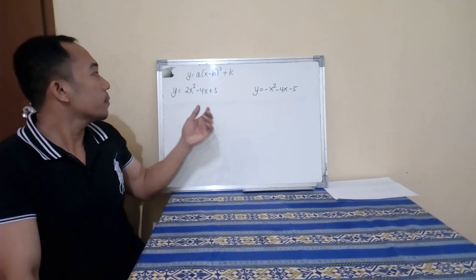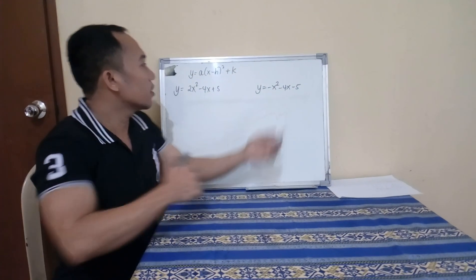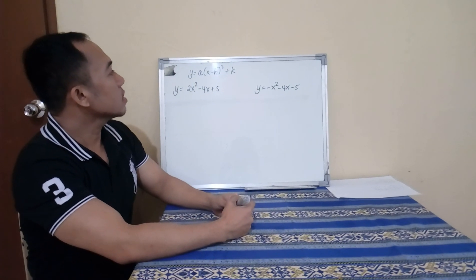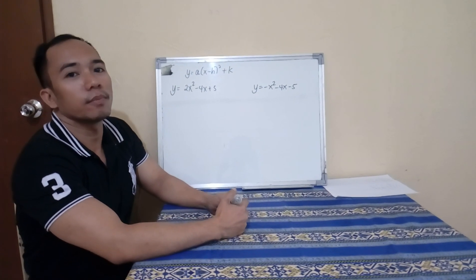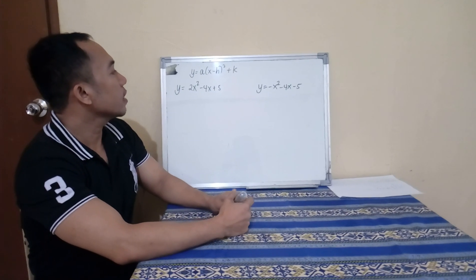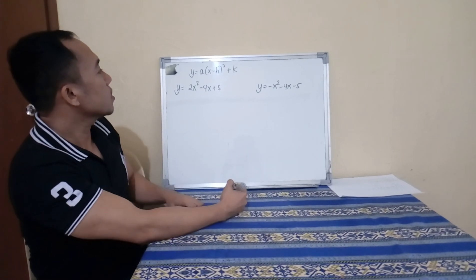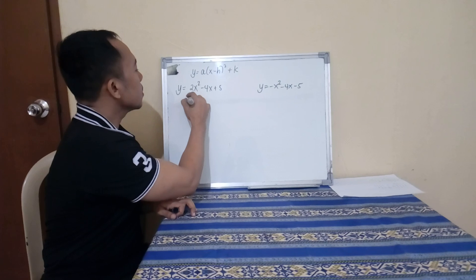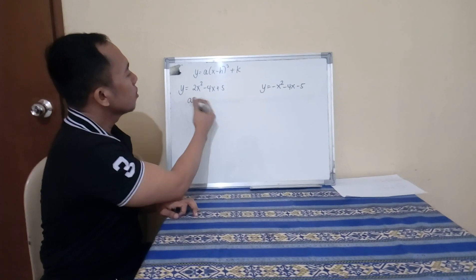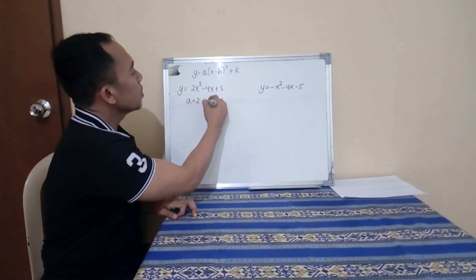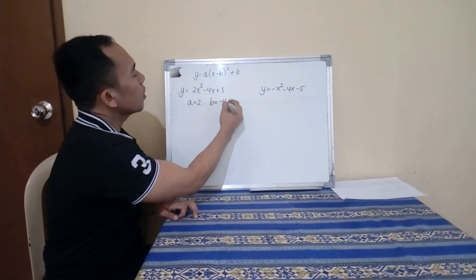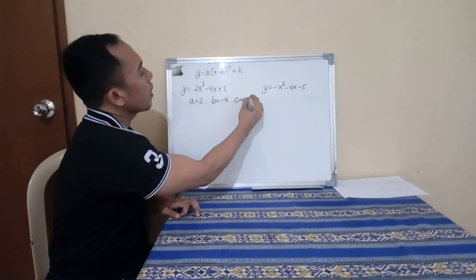For example, this is our quadratic function. We will convert this into its vertex form. First, we need to identify the letters A, B, and C. Our A here is 2, B is negative 4, and C is 5.